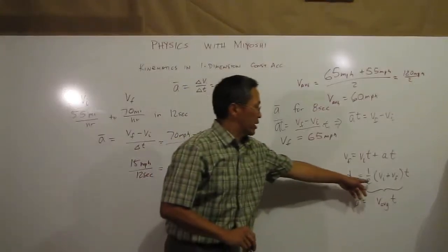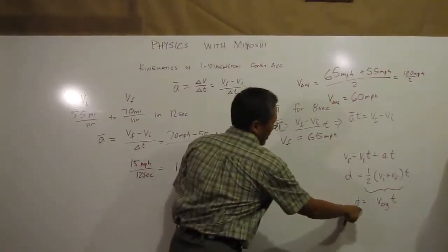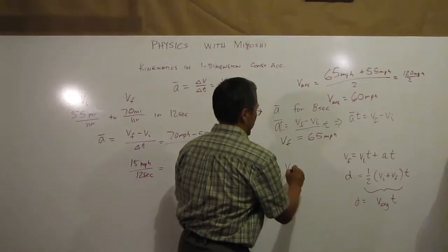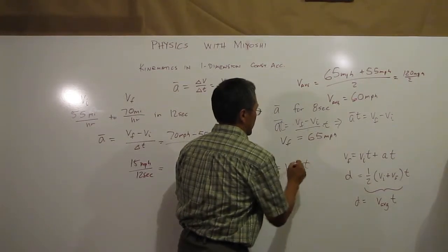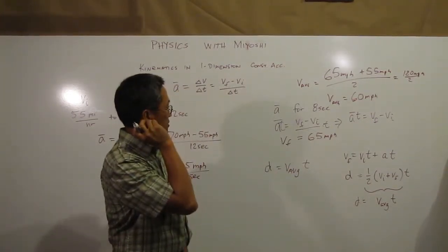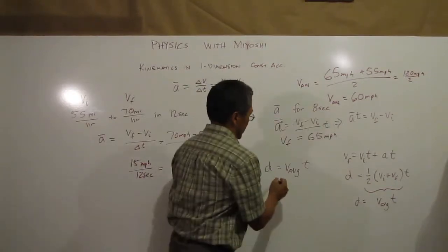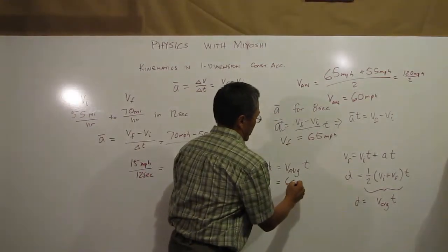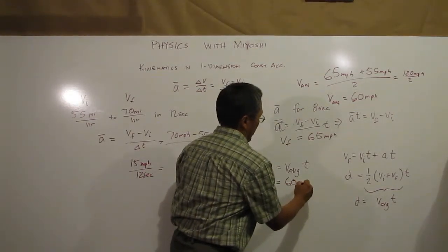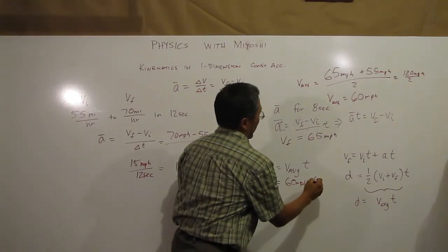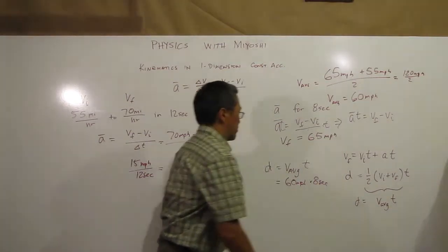Okay, so if I plug that into this equation here, or actually this one here, is V average times time. I know that it took me 8 seconds, so I do 60 miles per hour times 8 seconds. Oh, I have a problem there a little bit.